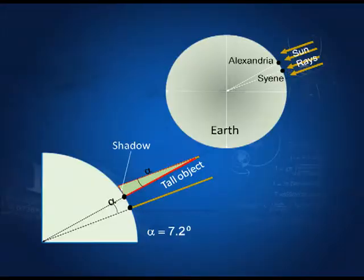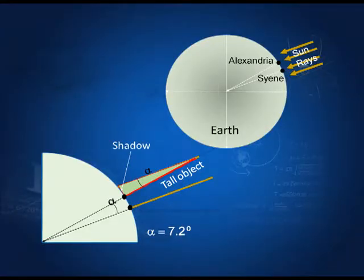In fact, you can also try to do this in a very simple manner. The sun rays at Syene come vertically downward; at Alexandria they are at an angle alpha, which is the same angle. Since we know alpha and the distance between the two places, we can determine the radius of the earth. You will be surprised to know that over two thousand years ago this radius was determined with quite good accuracy.